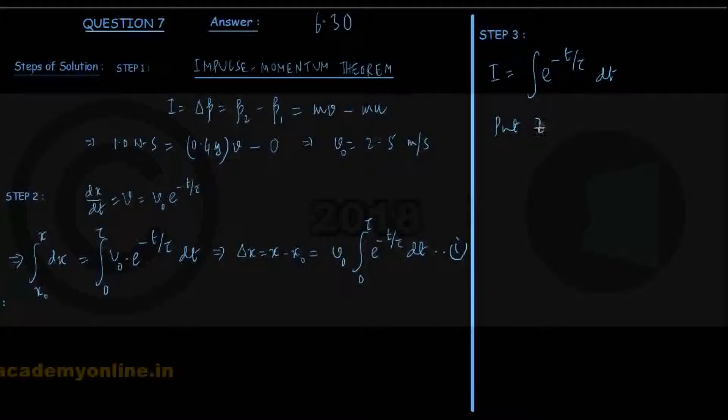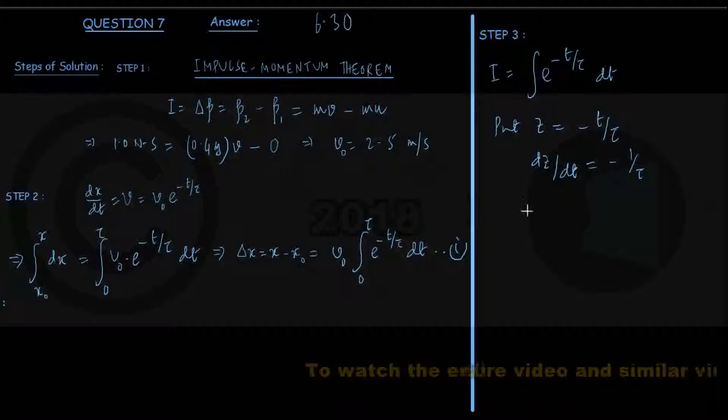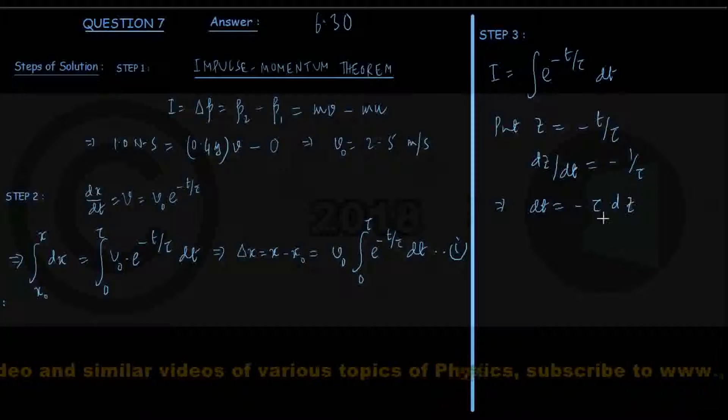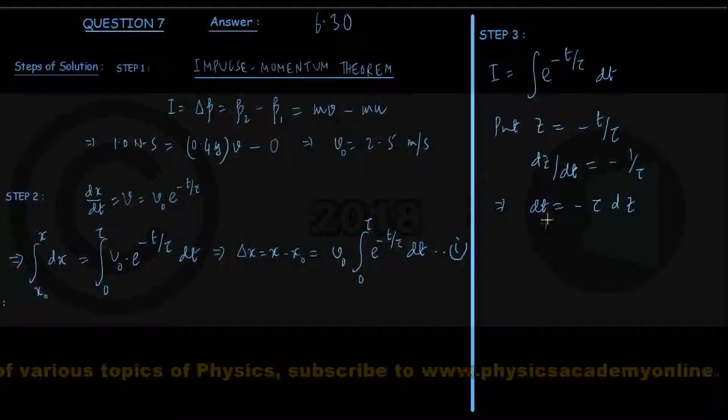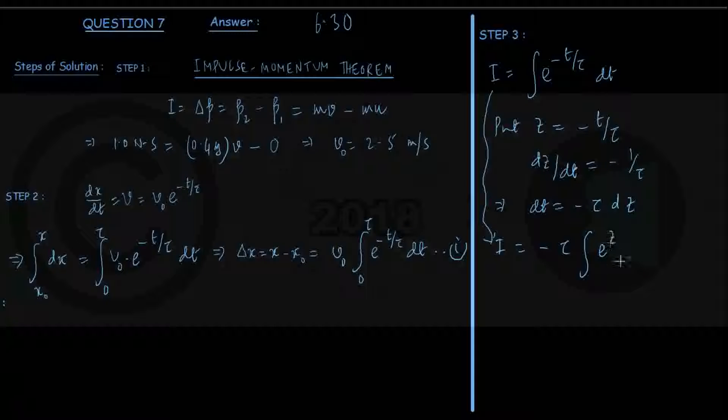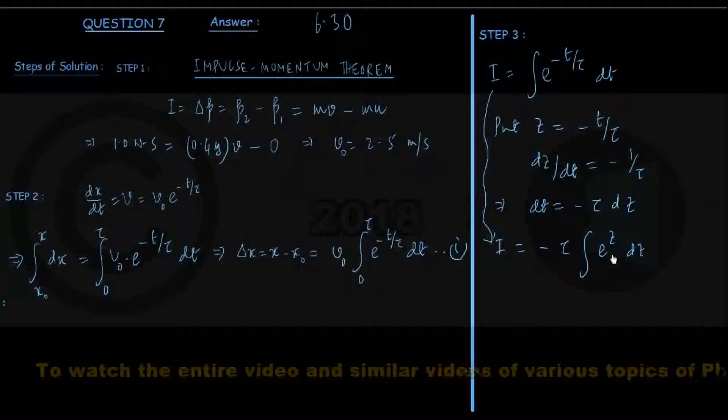Let us put a new variable z equals minus t by tau, so that dz/dt becomes 1 by tau, and we can express dt equals minus tau times dz. Returning here, we can write now I equals minus tau under integral sign e to the power z dz. If I put dt equals minus tau dz, minus tau taken outside the constant, integration of e to the power z dz, and this is leaving me simply minus tau times e to the power z.